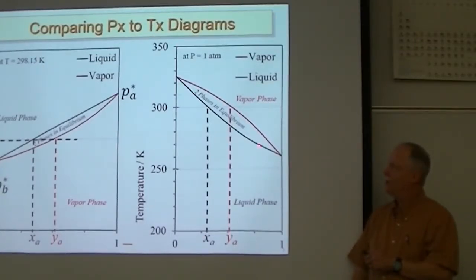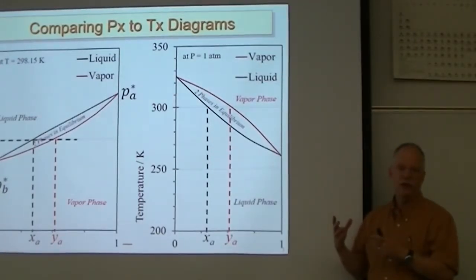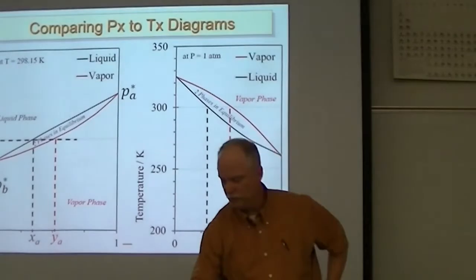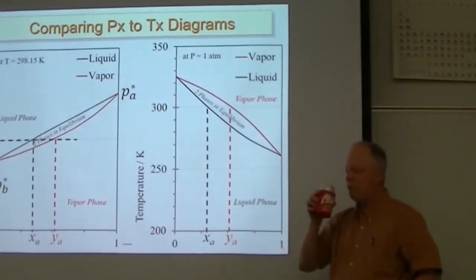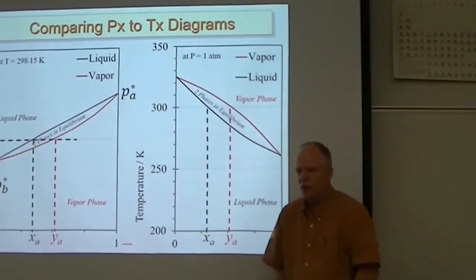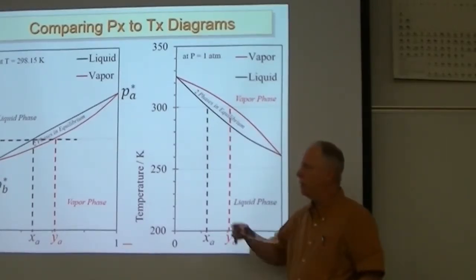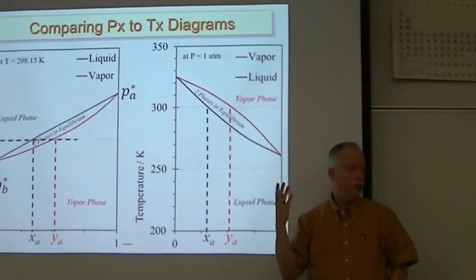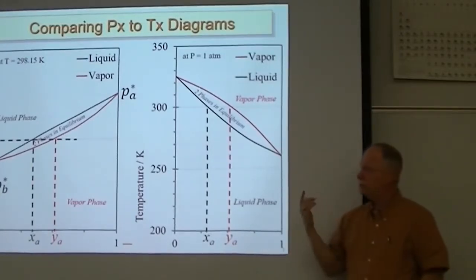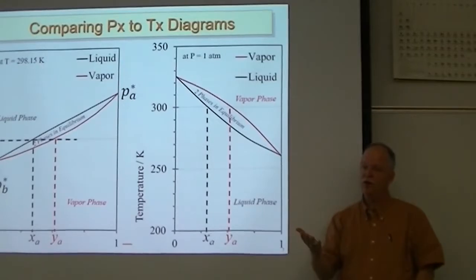A student asked: if you have a higher vapor pressure, does that mean a lower boiling point? Yes, correct — if you have a higher vapor pressure, you have a lower boiling point. You can see in the diagram that substance A has a lower boiling point and higher vapor pressure. Those things with higher vapor pressure boil at lower temperatures.